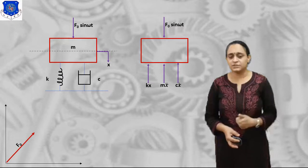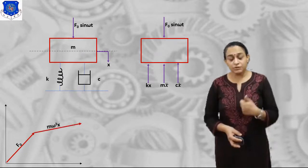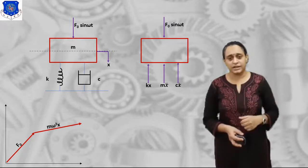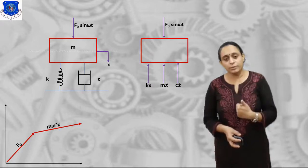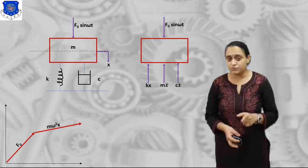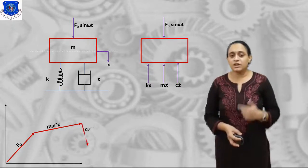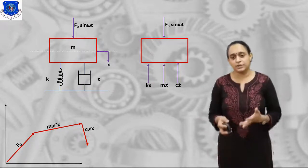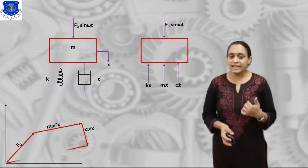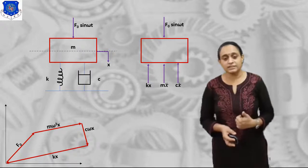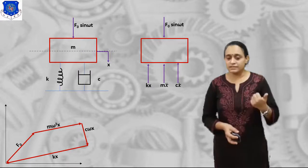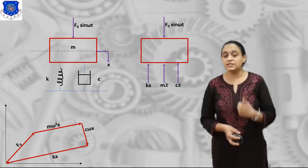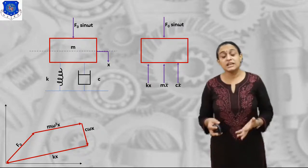Let us draw the diagram same as the force damped vibration. First, we draw the inertia force Mω²x. If you have studied forced damped vibration, you know the force acts as Mω²x with angle (ωt − φ) — the angle of inertia force is ωt − φ. Now the damping force is Cωx, and this Cωx is perpendicular to Mω²x. Kx is again perpendicular to Cωx and parallel to Mω²x. So in this diagram, F0 is the external force and Mω²x is the inertia force.